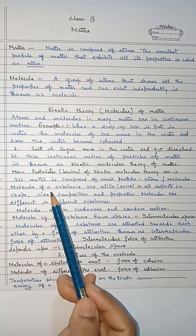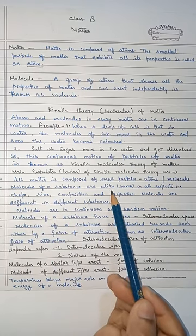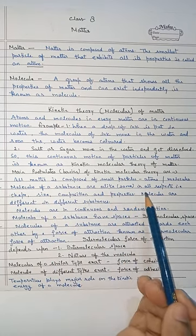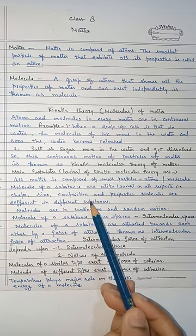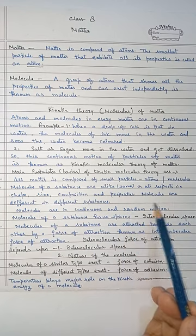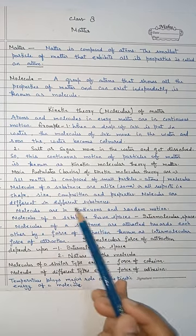Next, molecules of a substance are alike. Means they are same in all respect, means they are same in shape, size, composition and properties. Molecules are different in different substances.